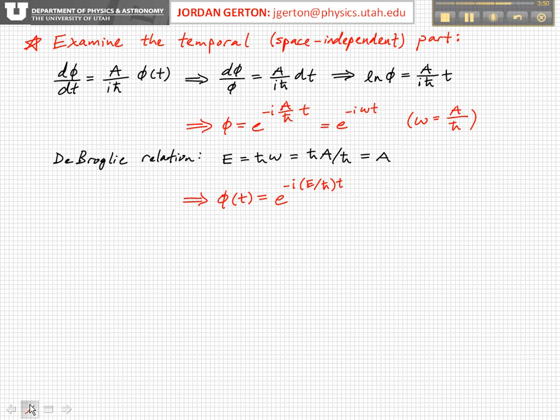So A, it turns out, this constant that we talked about in the last view graph, is actually just equal to the total energy, the total mechanical energy. So now we can rewrite the time, the temporal part of the wave function as φ(t) equals e to the minus i E over ℏ t.